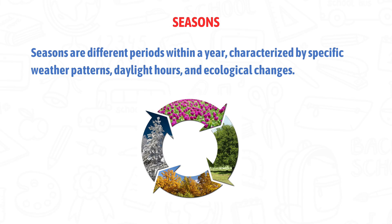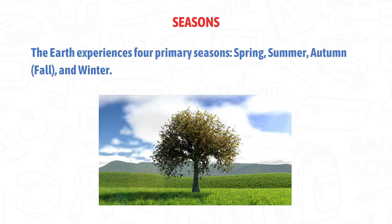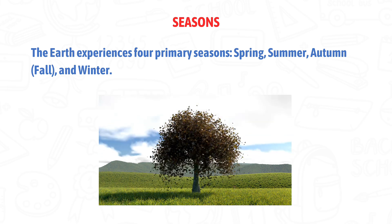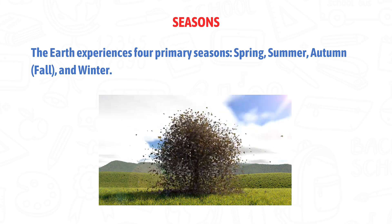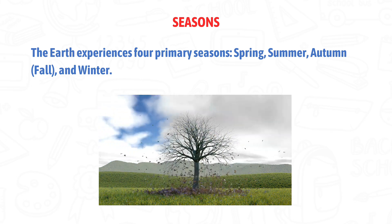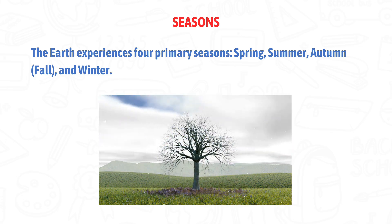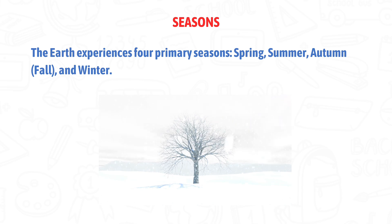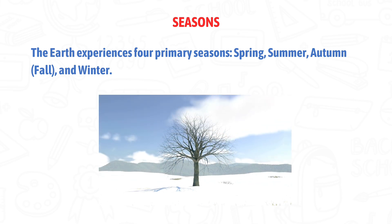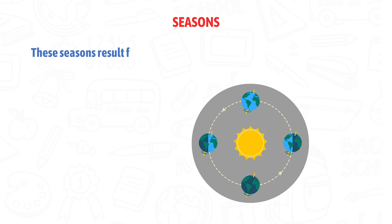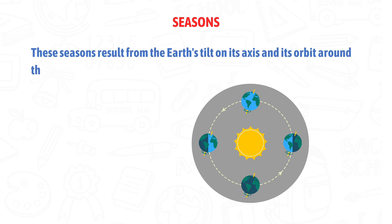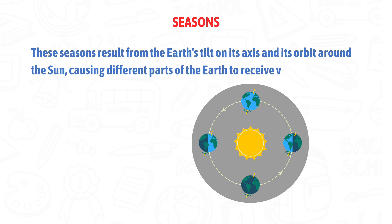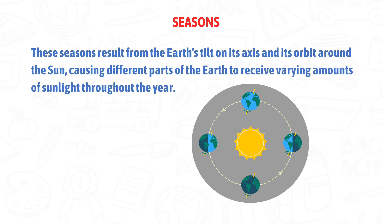Seasons are different periods within a year characterized by specific weather patterns, daylight hours, and ecological changes. The Earth experiences four primary seasons: spring, summer, autumn or fall, and winter. These seasons result from the Earth's tilt on its axis and its orbit around the Sun, causing different parts of the Earth to receive varying amounts of sunlight throughout the year.